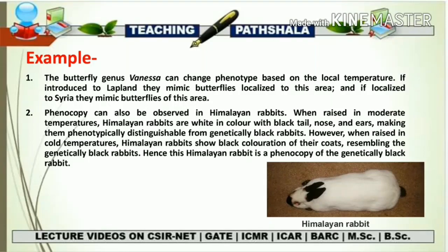There are more examples of phenocopy. The butterfly genus Vanessa can change its phenotype based on local temperature. If introduced to a lab plant in one area, they mimic butterflies localized to that area; if localized to Syria, they mimic the butterflies of that area. So again, what appears to be a genetic identity of which butterfly is in the area is actually due to an environmental effect — the local temperature — causing the mimicry character to be adopted. This is a very good example of phenocopy.